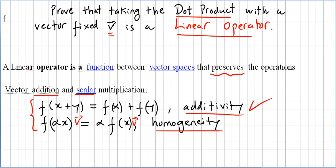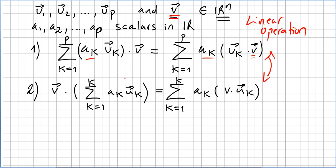We saw what the linear operator is. We have vectors u1, u2, up, and v — the fixed vector — all in the vector space R^n, and scalars a1, a2, ap in R. Now we are asked to prove properties 1 and 2.